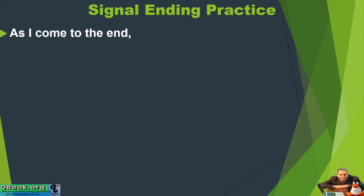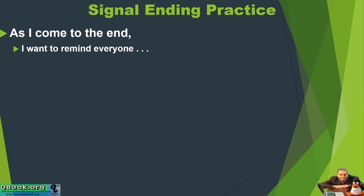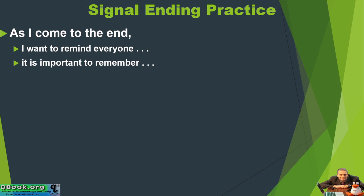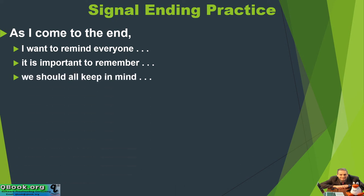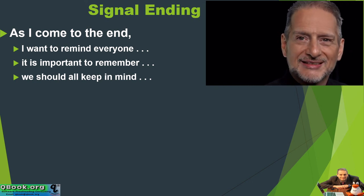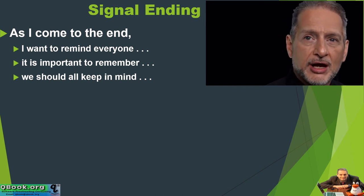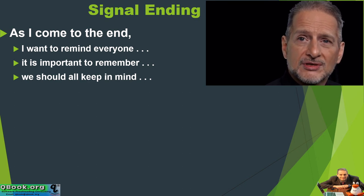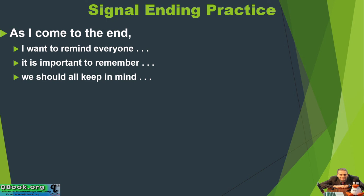As I come to the end, I want to remind everyone. As I come to the end, it is important to remember. As I come to the end, we should all keep in mind. I like this one because it signals that the ending is coming, but it also has this little bit at the end: 'I want to remind everyone,' 'it's important to remember,' 'we should keep in mind.' This is a great example of how we're going to really make our main point — remind you of the main point, and then list it.